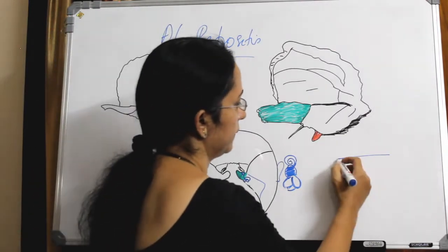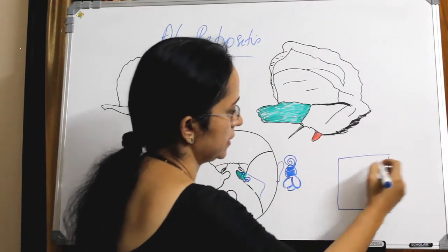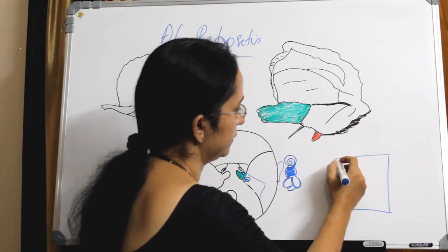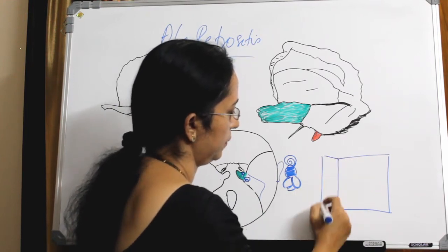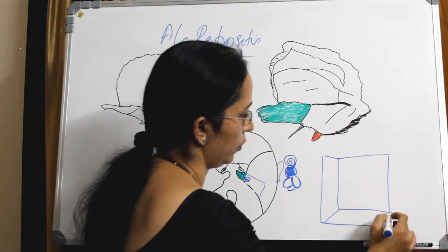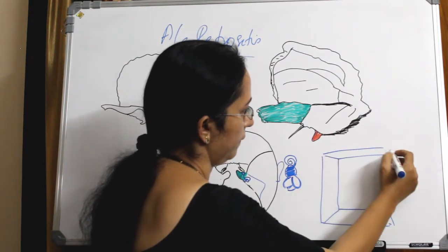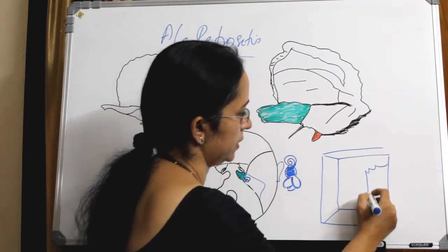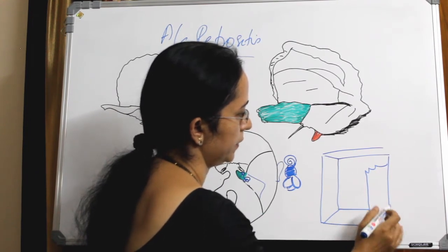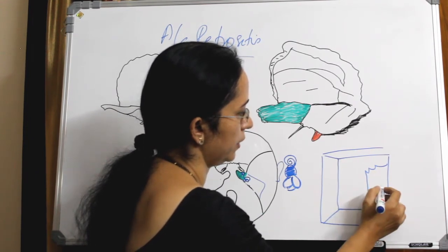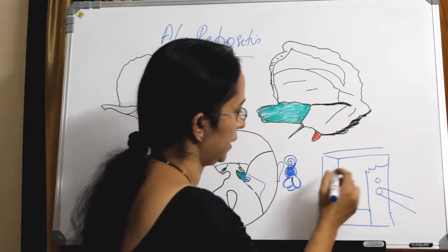If you draw the middle ear, this is the lateral wall, then the posterior wall, the floor, and the anterior wall. From the anterior wall goes the Eustachian tube.